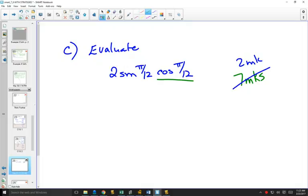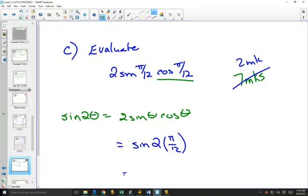2 sine theta cos theta is one of our identities. On your formula sheet, you have that sine of 2 theta is 2 sine theta cos theta. And so if you recognize that trigger, then you could rewrite this as equal to sine of 2, and theta would be pi over 12. And that reduces to sine of pi over 6, which is 1 half. A lot easier than the pi over 12 method. And you can see why it's a 2 mark question instead of a 7 mark question.